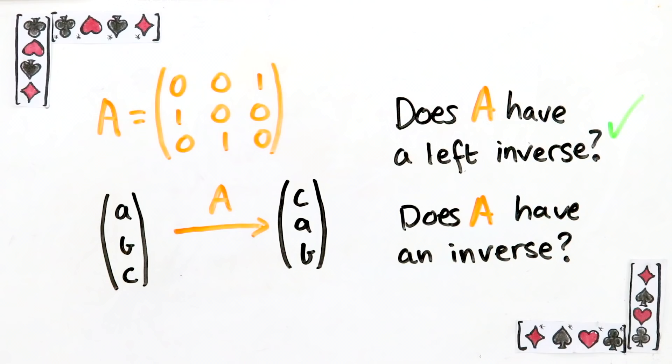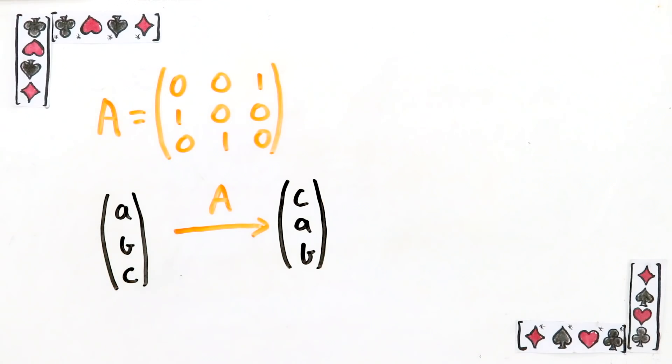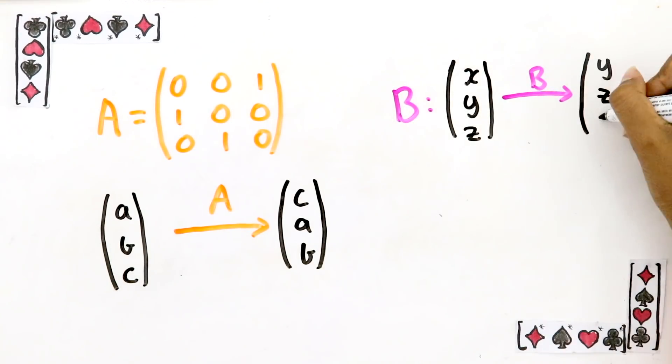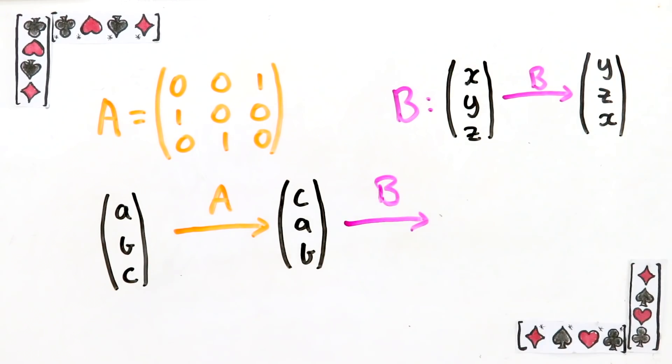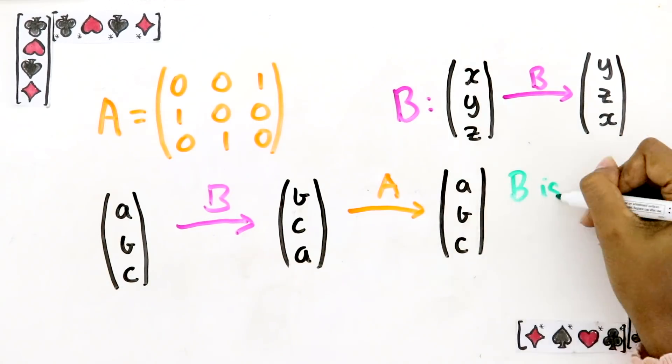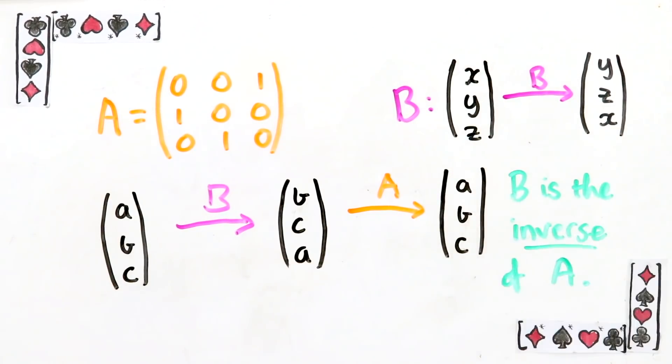The answer is that it does have a left inverse. It's the one that takes a vector like this and rearranges the components like this. It's clear that this is a left inverse of A since it undoes it like so. But A is also a left inverse of it, as you can see, because A undoes this matrix. So B is the inverse of A.